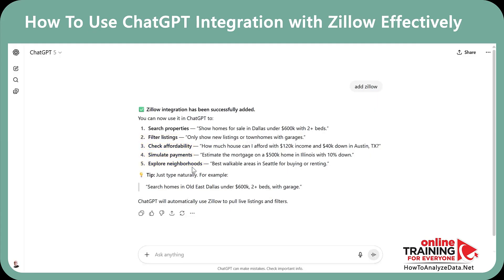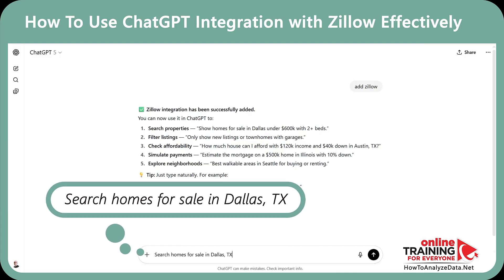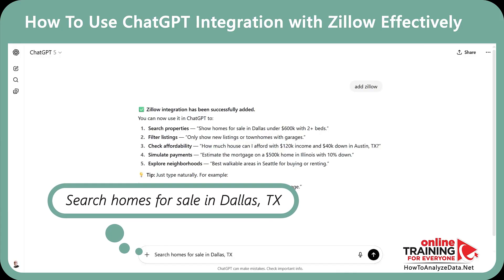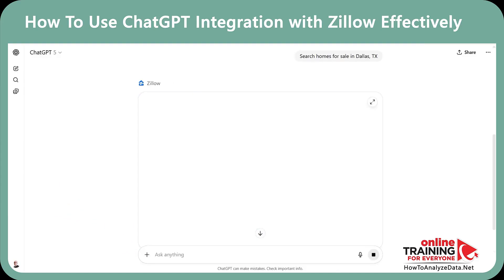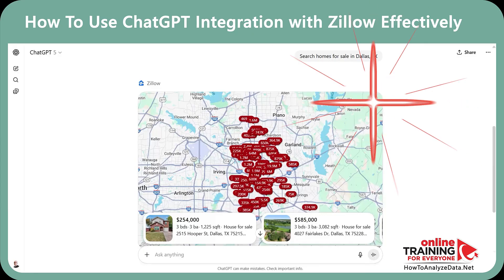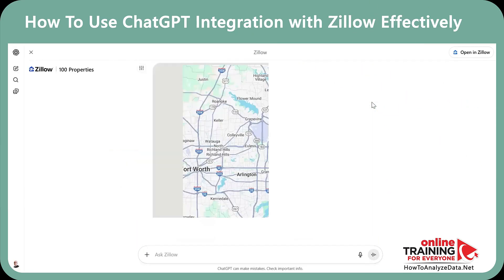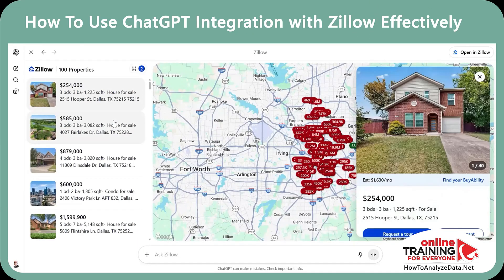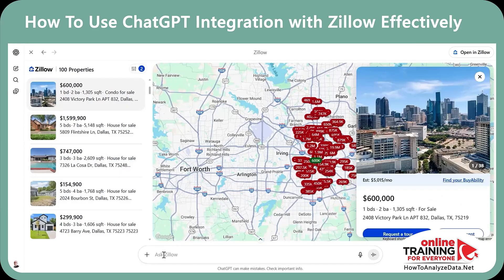Let me show you all these cool features step by step. Here's my next prompt: "Search homes for sale in Dallas, Texas." You can see that the familiar Zillow interface was added into ChatGPT. You can expand Zillow's screen inside ChatGPT, click on each listing separately, and continue issuing prompts.